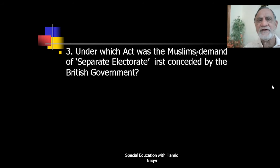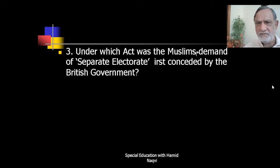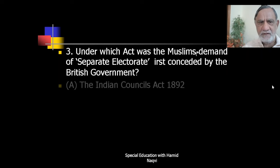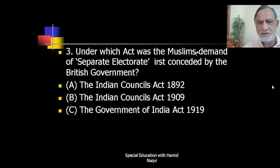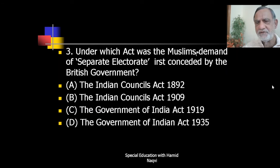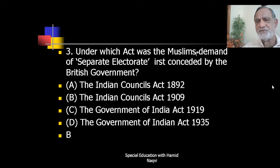Next question: under which act was the Muslims' demand of separate electorate first conceded by the British government? The options are the Indian Council Act 1892, Indian Council Act 1909, the Government of India Act 1919, or the Government of India Act 1935. The correct answer is B — the Indian Council Act 1909.